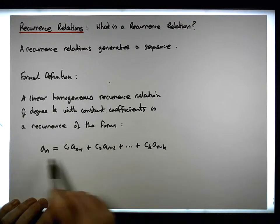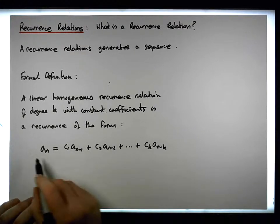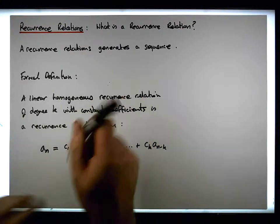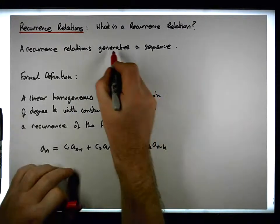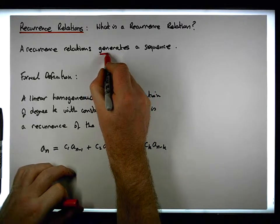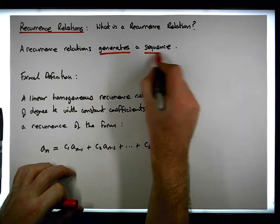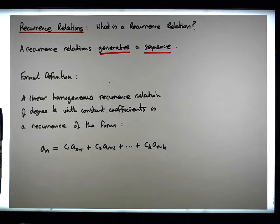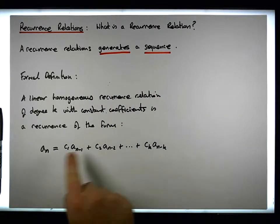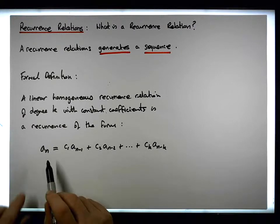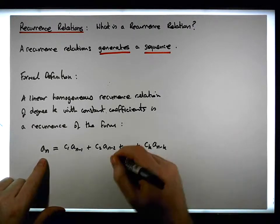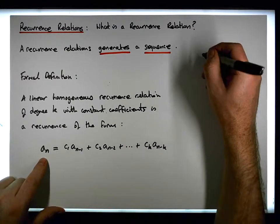These recurrence relations effectively generate sequences for us, once we have the full definition of the recurrence. So let's look at a simple example.